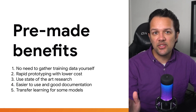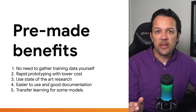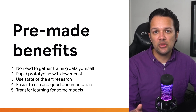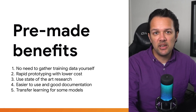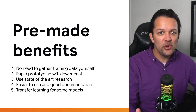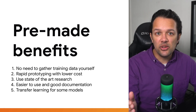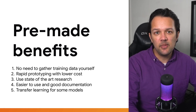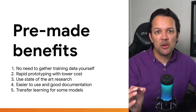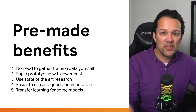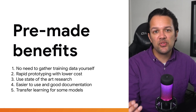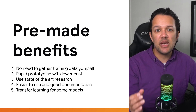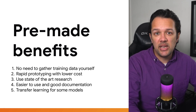Let's recap the benefits of using a pre-made model. First, there's no need to gather all of the training data yourself — in machine learning, this is typically where you spend most of your time and money, and here it's all been done for you. Second, you can prototype faster and at a lower cost when using a pre-trained model like COCO SSD. Third, many of these models use state-of-the-art research — these are top quality models from real researchers, not just toys. Fourth, many pre-trained models are easier to use and provide good documentation.